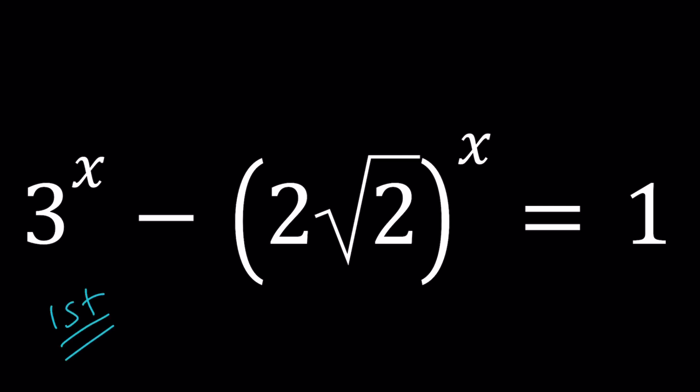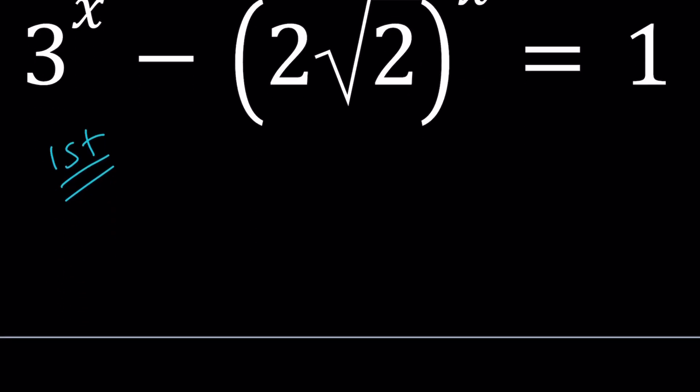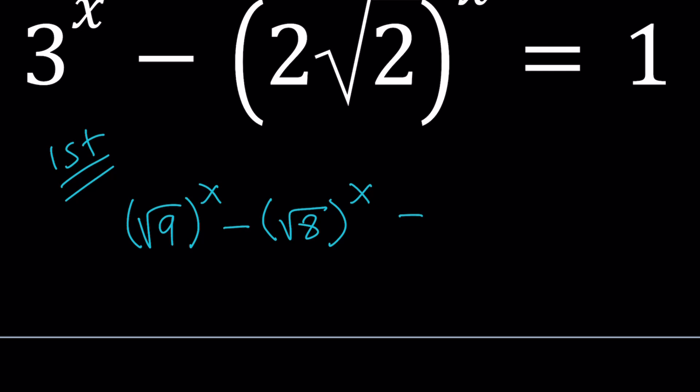If you think about the 3 as the square root of 9 raised to the power x, and 2 root 2 as the square root of 8 to the power x equals 1, then x equals 2 is clearly a winner, because 9 minus 8 is equal to 1. So is that the only one? Let's go ahead and find out and explore a little bit more.